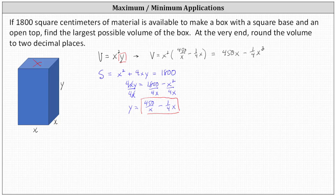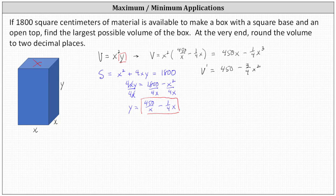The next step is to find the critical numbers, which is where the derivative of the volume function is equal to zero or undefined. Finding V prime of x, which is equal to the derivative of 450x minus one-fourth x cubed, gives us 450 minus three-fourths x squared. Notice the derivative is never undefined, so we set it equal to zero to find the critical numbers.